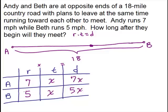So Andy, 7x, that means this line segment from here to here is 7x. That's how long that is. And then Beth, her distance from here to here is 5x.